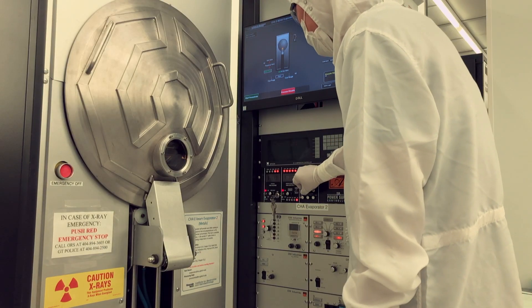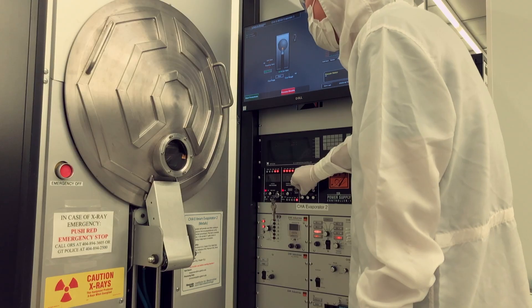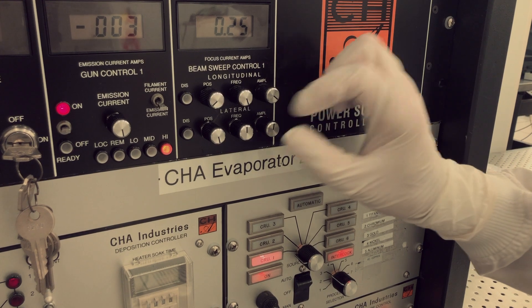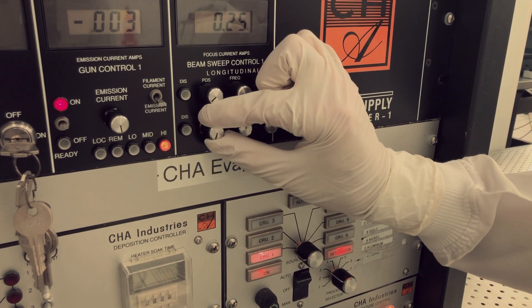The XY sweep controller controls the position of the electron beam. For proper operation, the beam must move in a circle inside the crucible. The beam should not touch the edges of the crucible.